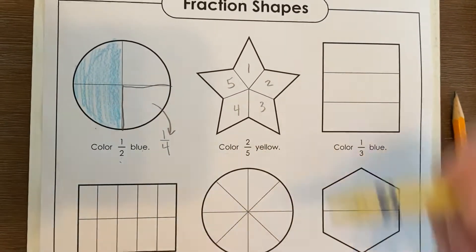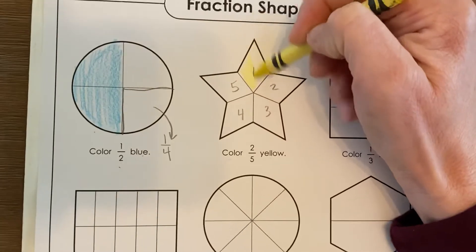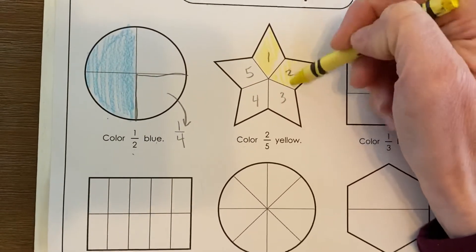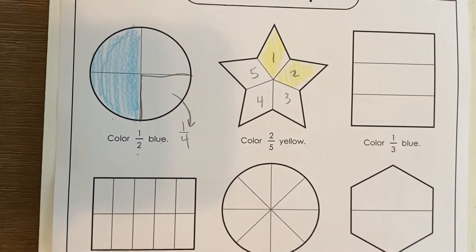Two-fifths yellow. So I'm going to color one-fifth yellow, two-fifths yellow. That's all they say to do.